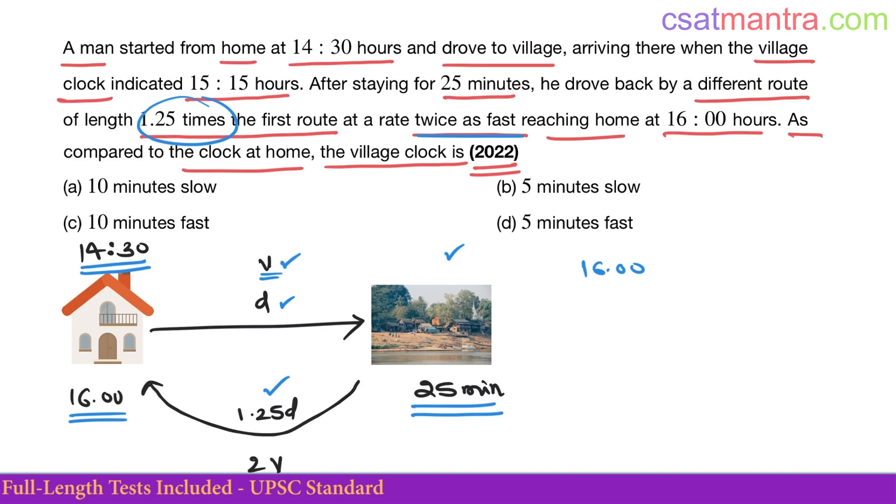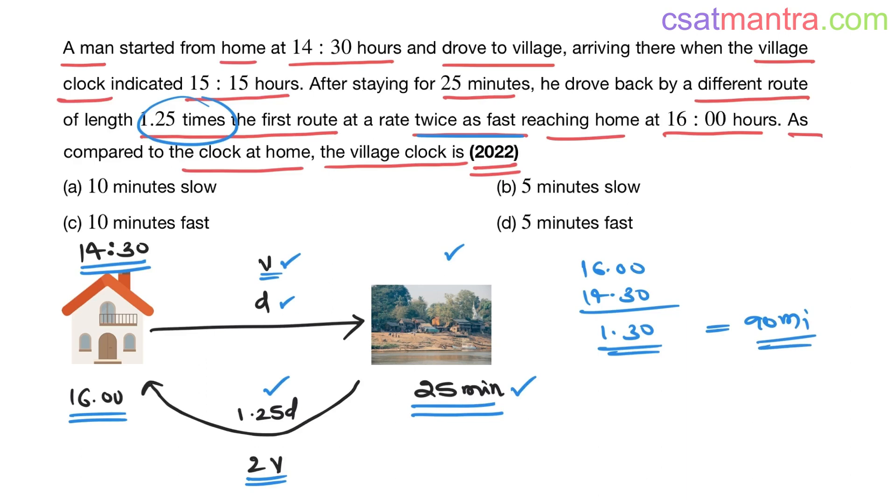16:00 minus 14:30, that is 1:30 hours. 1:30 hours means 90 minutes. Here we have time in minutes, let's convert this into minutes as well. 90 minutes.